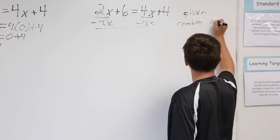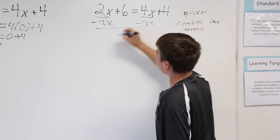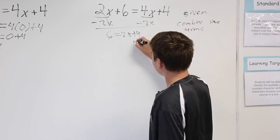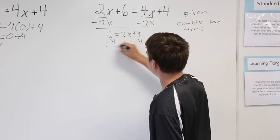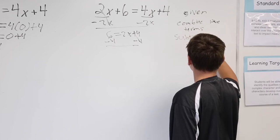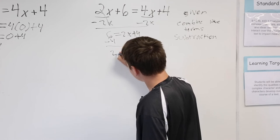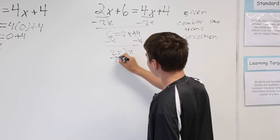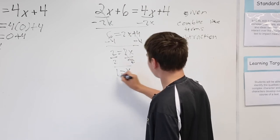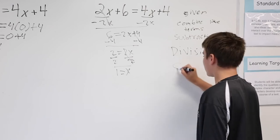To get six equals two x plus four. You would then subtract four from both sides, and then you would get two equals two x. Do the division to get x by itself, and you would get x equals one as your solution.